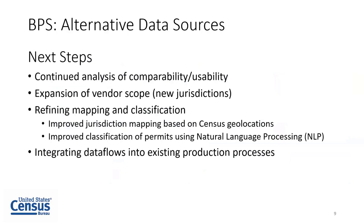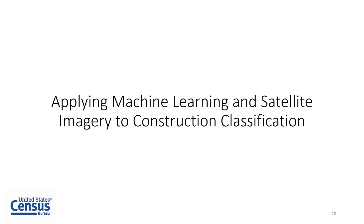As we continue our research and analysis on the comparability and usability of these alternative data sources, we have a few key steps ahead. These include incorporating expanded vendor coverage, refining our permit mapping and classification algorithms through data science techniques such as natural language processing, and establishing back-end architecture to appropriately integrate these data flows into our existing indicator processing. All of these efforts are bringing us closer to our goal of reducing our reliance on traditional survey collection modes, but perhaps the most exciting research is what we'll dive into next.